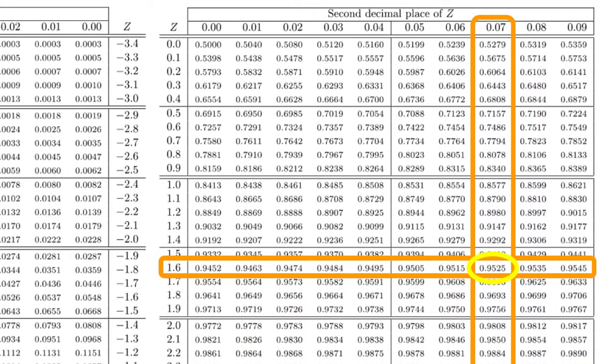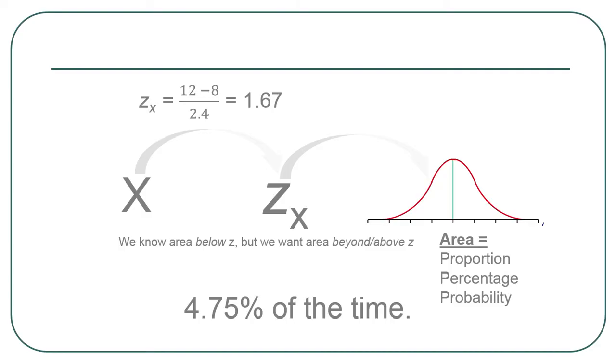So the probability we found in our table was 0.9525, and that gave us the area below, and so we had to take 1 minus our probability to find the area above that point in the normal distribution, and that was our estimate from the normal distribution, estimated proportion percentage probability.